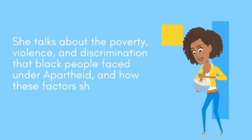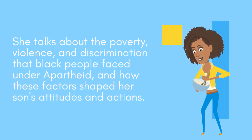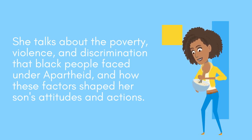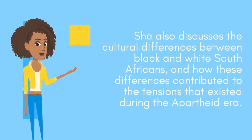She talks about the poverty, violence, and discrimination that black people faced under apartheid, and how these factors shaped her son's attitudes and actions. She also discusses the cultural differences between black and white South Africans, and how these differences contributed to the tensions that existed during the apartheid era.